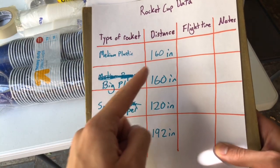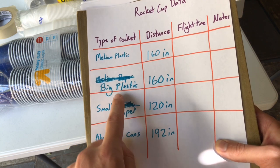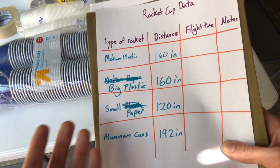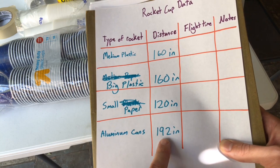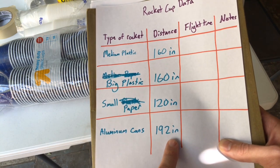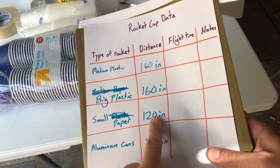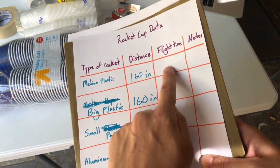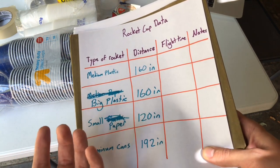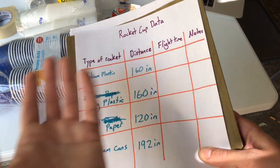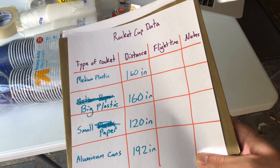You can see I wrote down my distances for each one. I had to make some revisions because the actual cups I had were not what I originally wrote down. My aluminum cans went the farthest at 192 inches. I did not get to measure flight time — I was only measuring distance. If I were to do flight time, I would simply launch them again and use the timer on my phone to see how long they're in the air, then write that down, whatever the answer comes out to be.